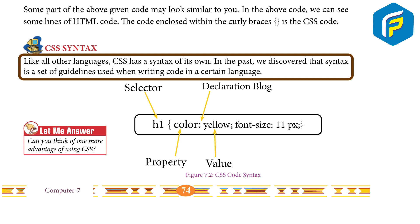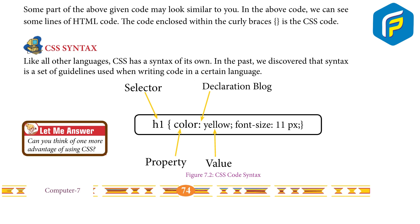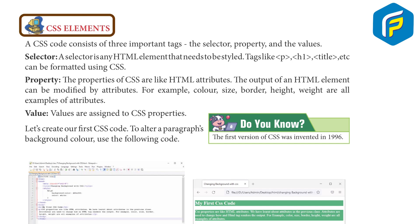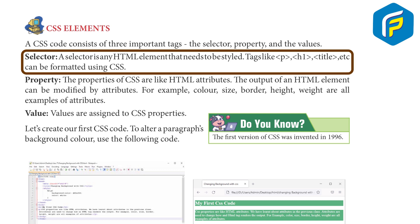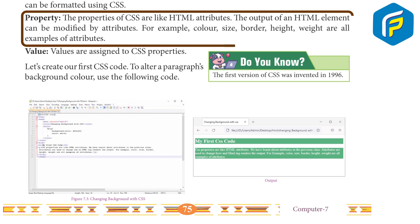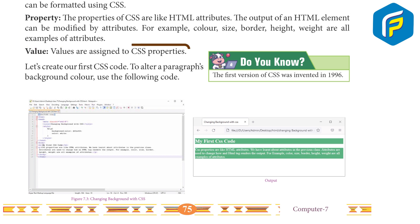CSS syntax: like all other languages, CSS has a syntax of its own. Syntax is a set of guidelines used when writing code in a certain language. CSS elements: a CSS code consists of three important parts — the selector, property, and values. A selector is any HTML element that needs to be styled; tags like p, h1, title etc. can be formatted using CSS. The properties of CSS are like HTML attributes — the output of an HTML element can be modified by the attributes; for example, color, size, border, height, and weight are all examples of attributes.